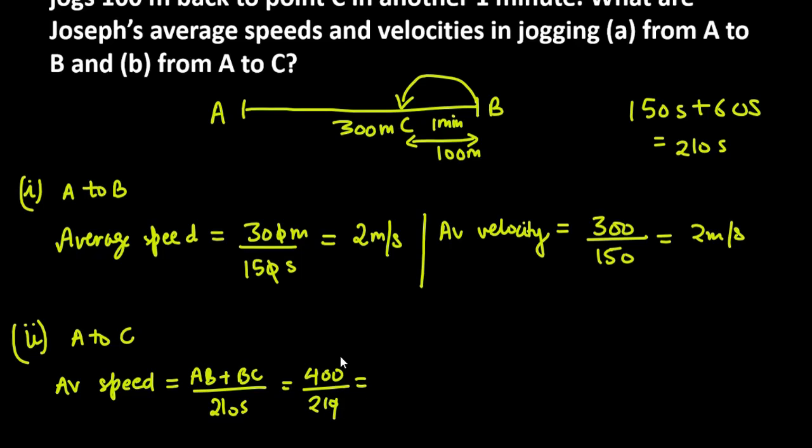Toh, aapki value ke aagay? 40 over 21. Or, 40 over 21 ko agar aap divide karo ge, toh, you will get 1 over 9 meter per second.